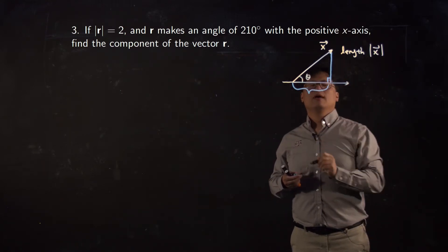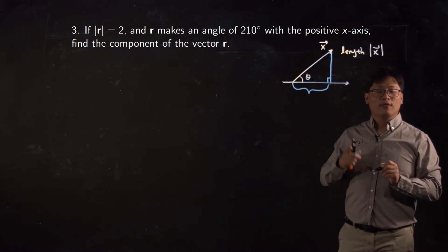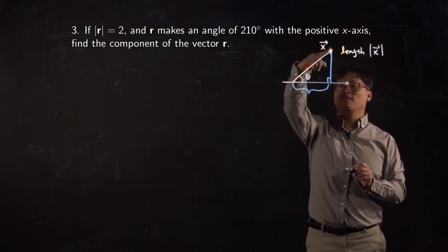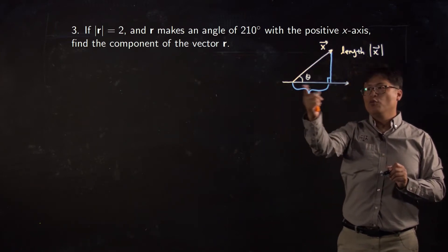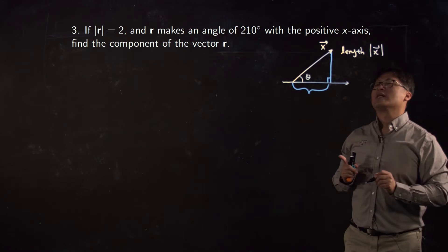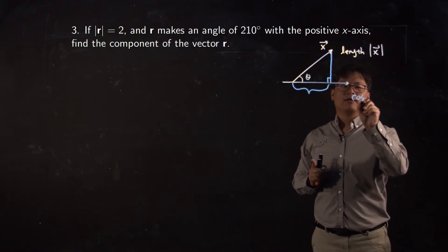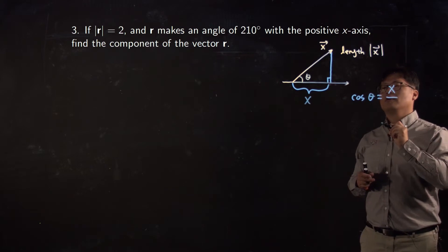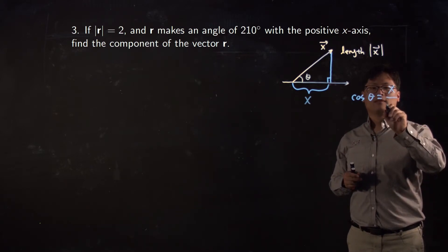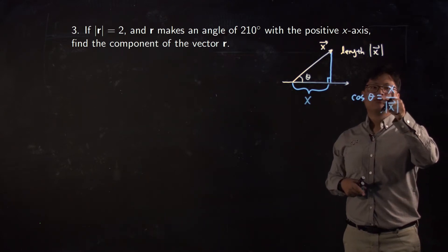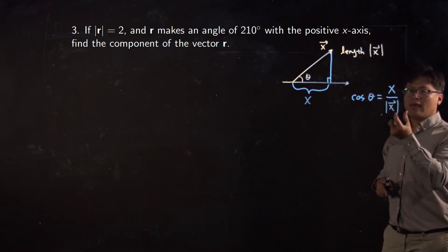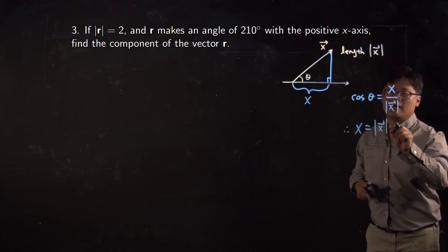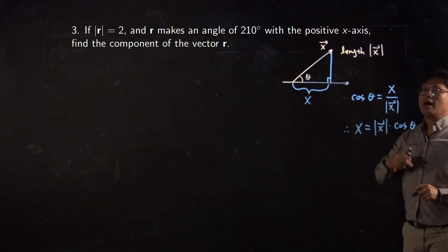Look at this: the x-component is the adjacent side of your angle theta. Do you remember the trig function concerned with adjacent? It's cosine, because we know the length of the vector, which is the hypotenuse, and we want the adjacent side. So cosine theta equals adjacent over hypotenuse — that is, x over the length of the vector. Multiplying both sides by the length of the vector, your x-component equals the length of the vector times cosine theta.